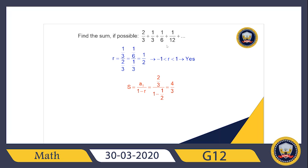In this case, we have another geometric sequence. To find r, we divide: (1/3) ÷ (2/3) = 1/2. Since r is less than 1, yes, we have a summation and we can use the formula to find the sum of this infinite geometric series.